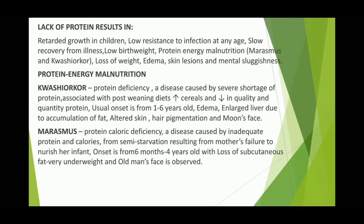Protein energy malnutrition: First, Kwashiorkor — protein deficiency. A disease caused by severe shortage of protein, associated with post-weaning diet with decreased quality and quantity of protein. Unusual onset is from 1 to 6 years old. Signs include enlarged liver due to fat accumulation, altered skin, hair pigmentation, and moon face. Second, Marasmus — protein-calorie deficiency. A disease caused by inadequate protein and calories from semi-starvation resulting from a mother's failure to nourish her infant. Onset is from 6 months to 4 years old; signs include loss of subcutaneous fat, very underweight, and old man's face.